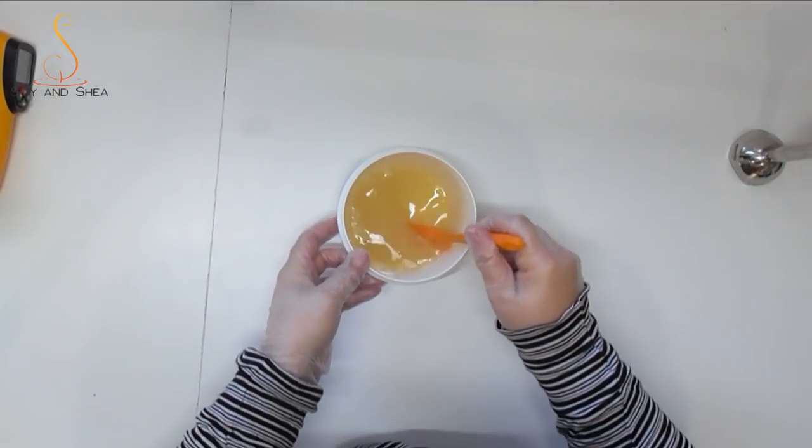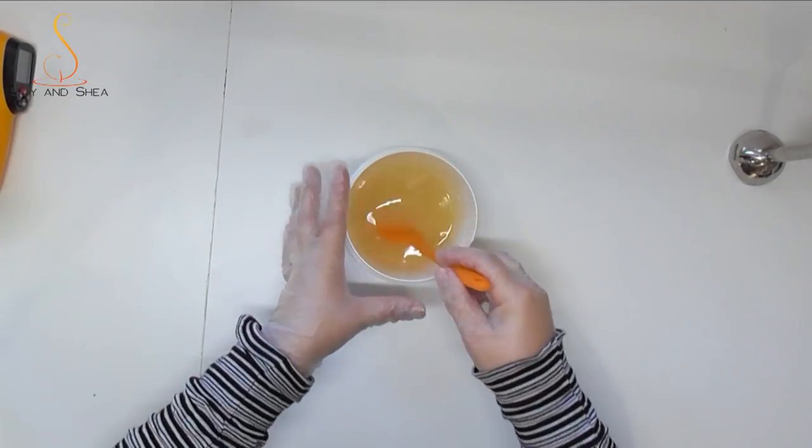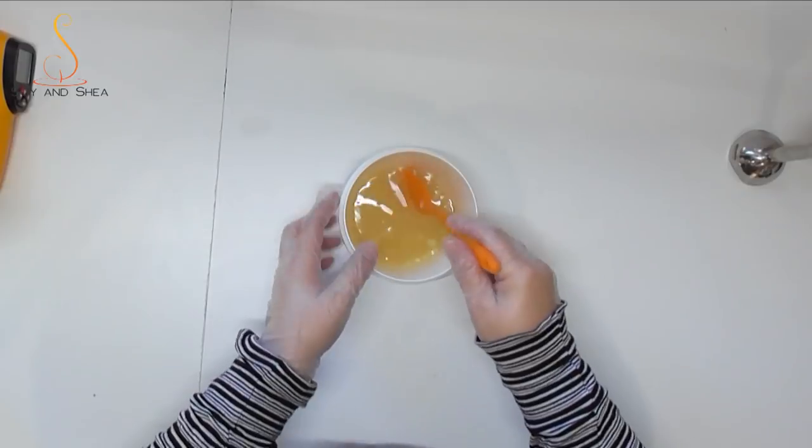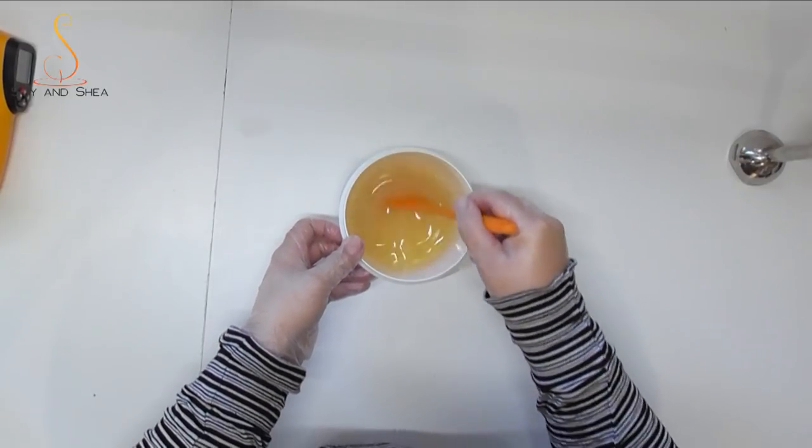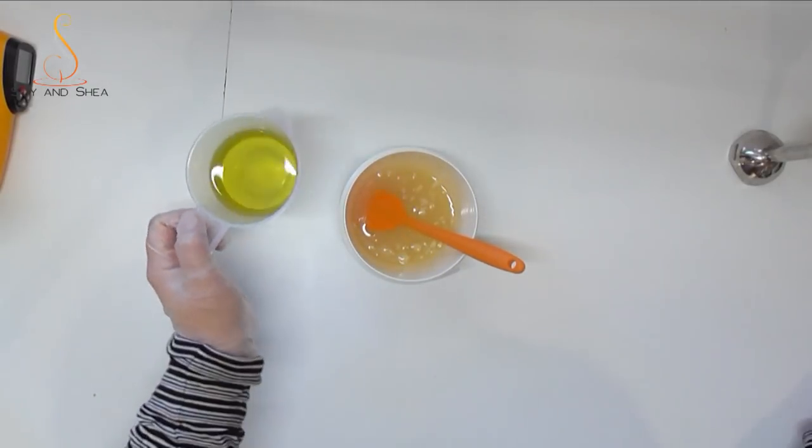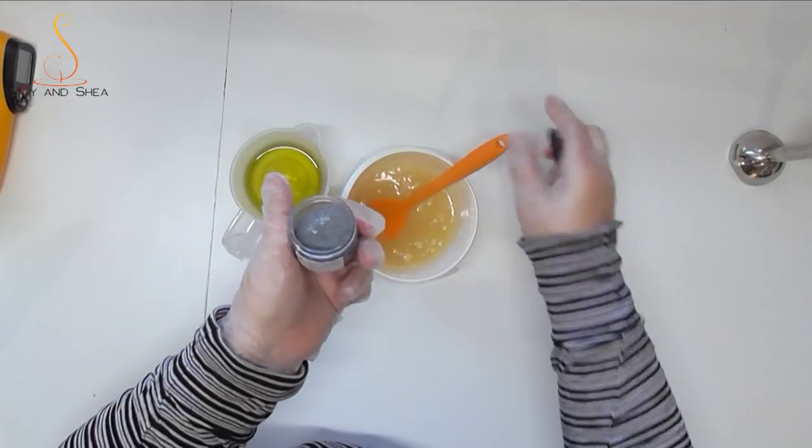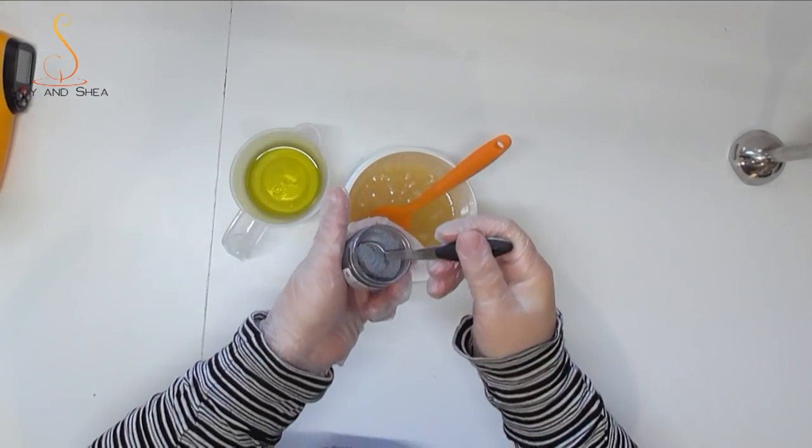Okay, so that has pretty much all melted down. There's a few little bits and pieces still floating on the top, but I'm happy enough with that—the stick blender will actually finish breaking all that down once we start blending. What I have in this little jug here, I have my oils.